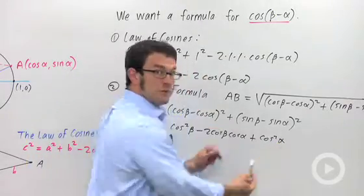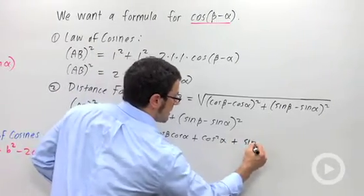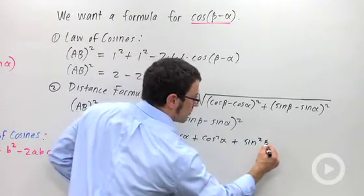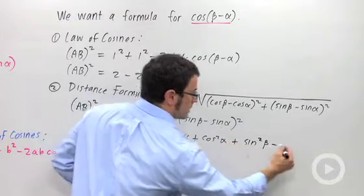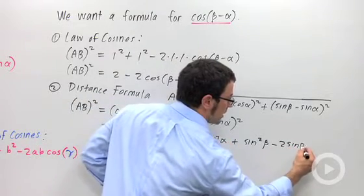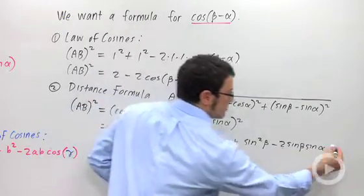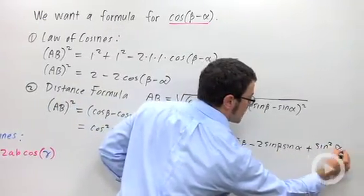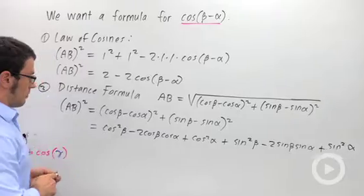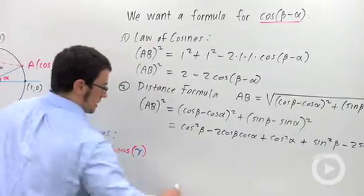Now let's do this term. So plus sine squared beta minus twice the product, 2 sine beta sine alpha plus sine squared alpha. It looks terrible, but something really nice is about to happen. Check this out.